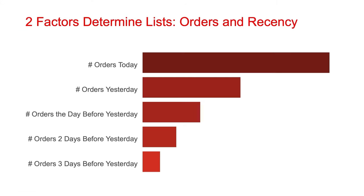Two factors determine the books on bestseller lists and their rankings: number of orders received and the recency of those orders. If you're looking at a bestseller list for today, the sales a book made today have a higher weighting than the sales made yesterday, and yesterday's sales outweigh the day before. Sales from any day don't have much effect on bestseller rankings after five or so days have passed. This system helps Amazon convey what's popular right now.